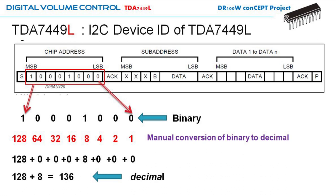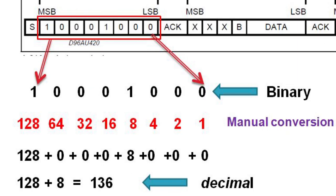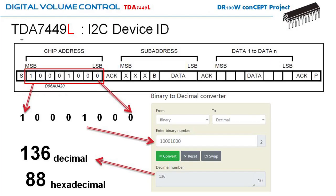I can convert the data manually: the binary ones correspond to 128 and 8, and adding those gives a sum of 136. You can verify this in a binary-to-decimal calculator and it will give you the same result — 136 in decimal, which is equivalent to 0x88 in hexadecimal.